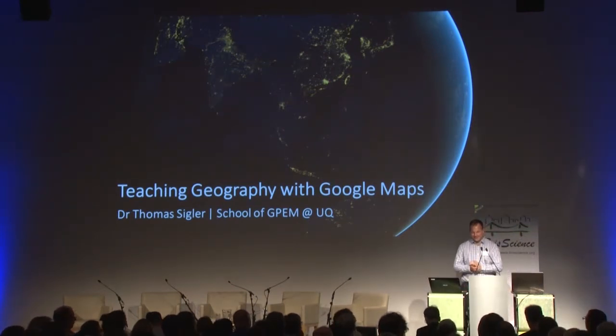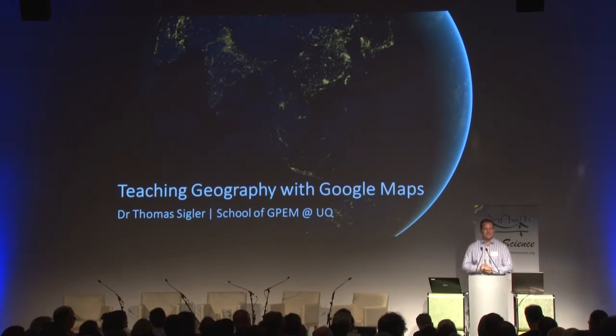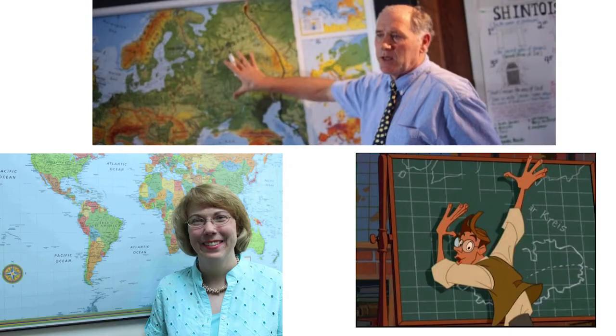Thank you all for coming. My name is Dr Thomas Siegler. I teach at UQ in the School of GPAM. I don't often talk about teaching, despite my job title being lecturer — I usually give presentations about my research. But this was a really interesting point of convergence. Teaching geography historically has relied upon maps that are static, often expensive, and don't change very often. They're either projected as political maps or physical maps, not often both. Some parts of the world have better mapping cover than others. I love maps — I have maps all over my walls — but it's very expensive and cumbersome to have hundreds of maps on site if you need to teach with them.